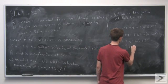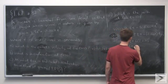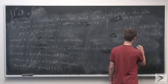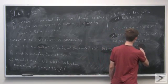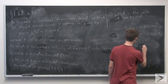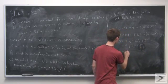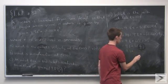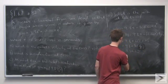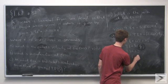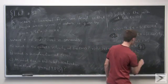Now 1.667 is approximately 1 and 2 thirds, so 6 times 0.1667 is approximately 1, and we get 9.8 plus 10, or 19.8. So the acceleration at t equals 10 is approximately 19.8, and the units of acceleration will be meters per second squared.